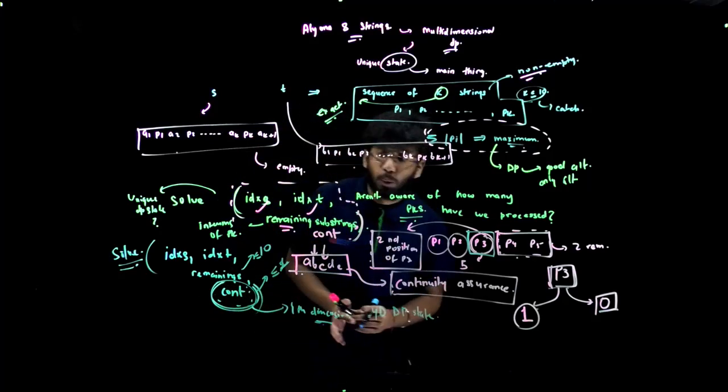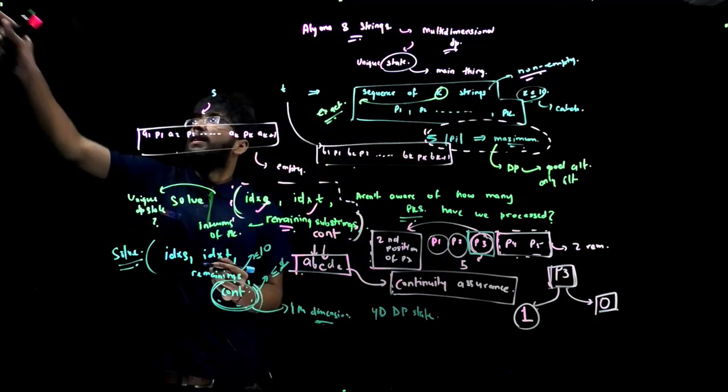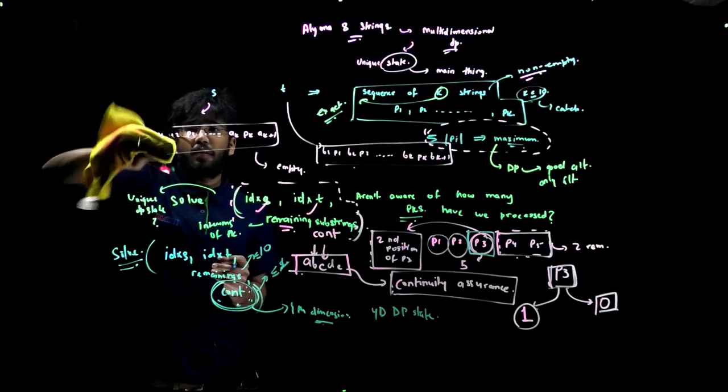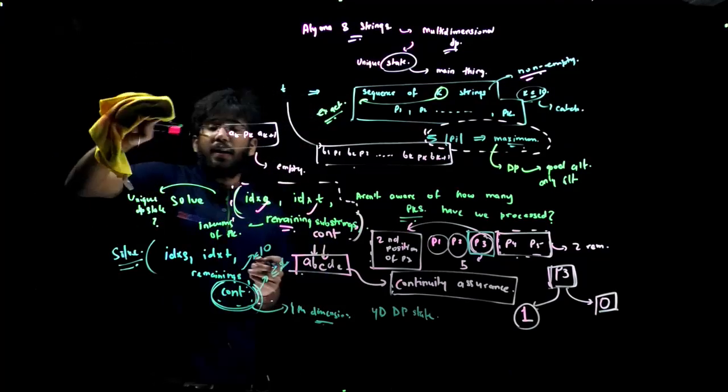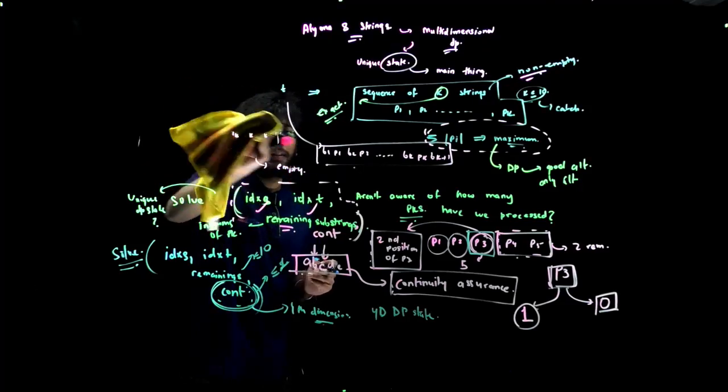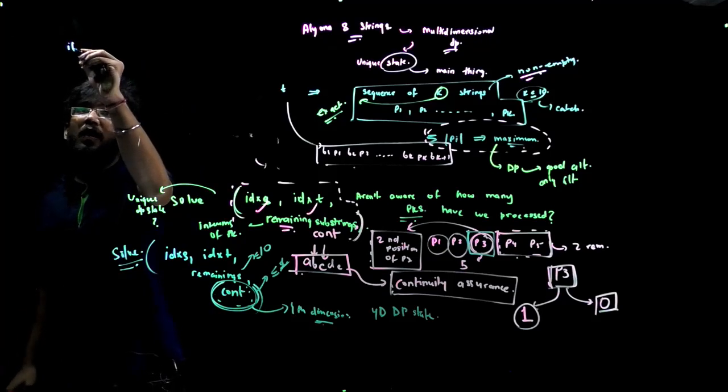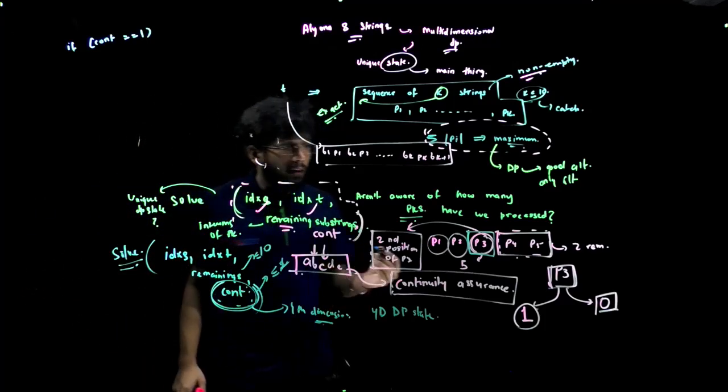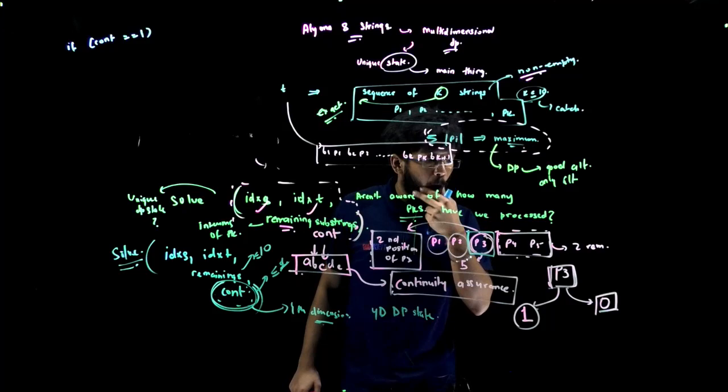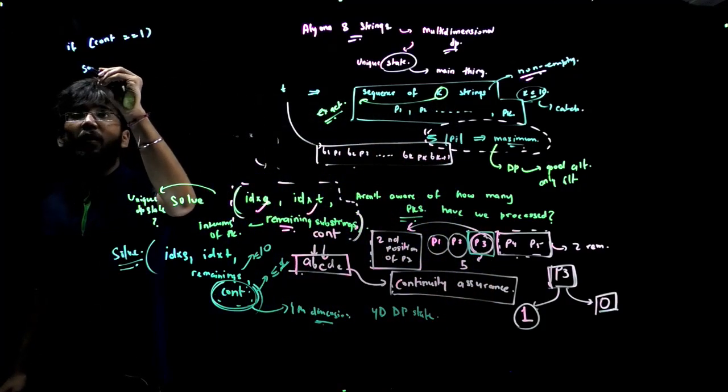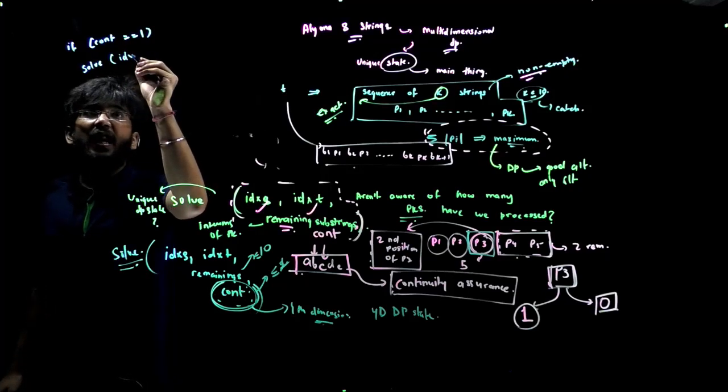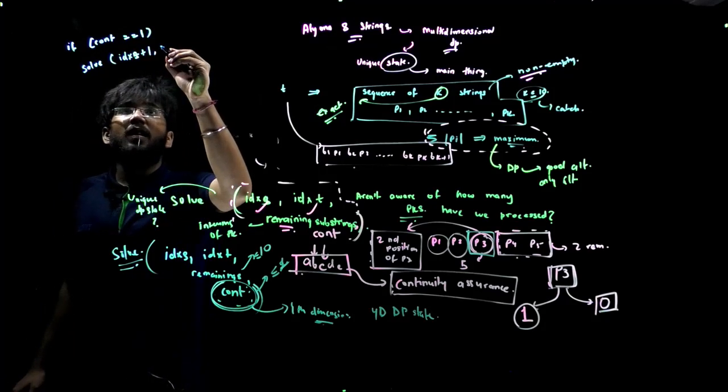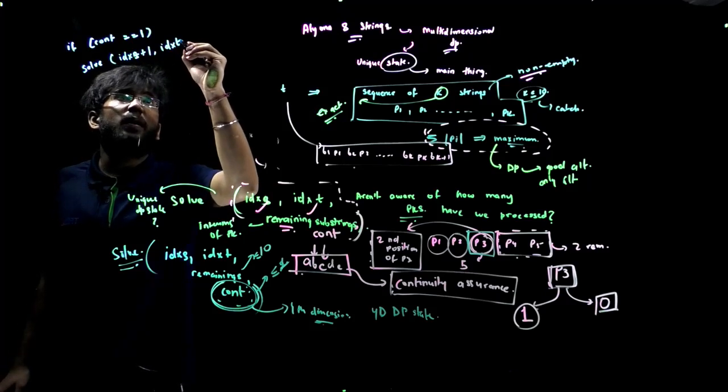Let's see the multiple cases that we have to analyze over here. The case could be that if we have a continuity coming from the back, like if continuity is equal to 1, this means that we need to do something in this DP state to either continue that particular string or terminate that.